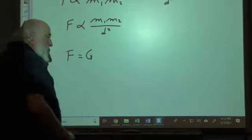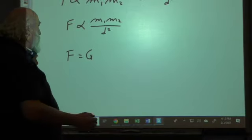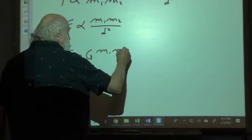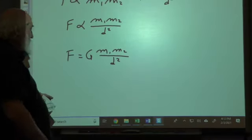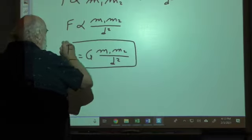That constant in this case is G for gravitation. And then F = G * m1*m2 / d². And this is his law of universal gravitation.